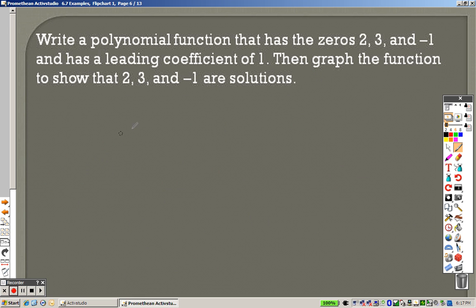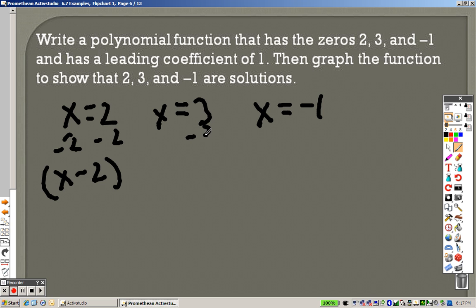Alright, the next one identical to that. They're saying your zeros are x equals 2, x equals 3, and x equals negative 1. I would minus 2 to both sides, so I end up getting x minus 2 for that one. I would minus 3 to both sides, so I end up getting x minus 3. I would add 1 to both sides, so I'd end up getting x plus 1.